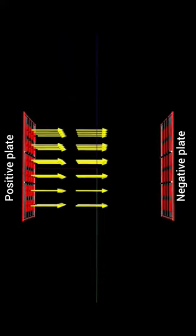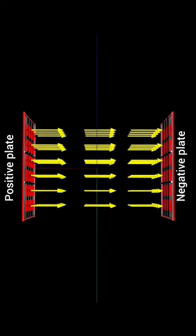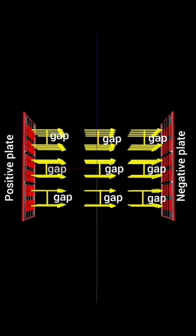The electric field lines that goes from positive plate to negative plate must be parallel to each other. The electric field lines must be equally spaced.